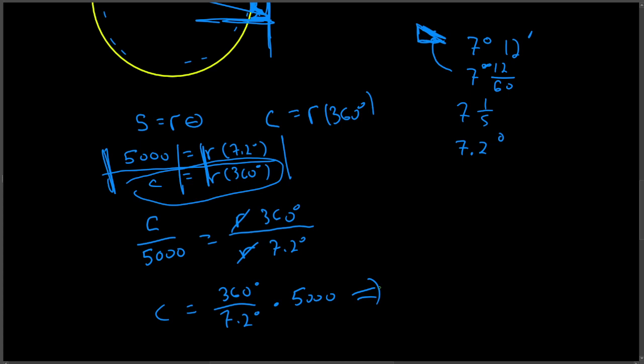And so putting that all together and we'll note that we'll run to the calculator here. 360 divided by 7.2 is 50, so this is 5,000 times 50 or 250,000 stadia.